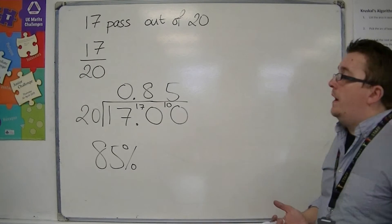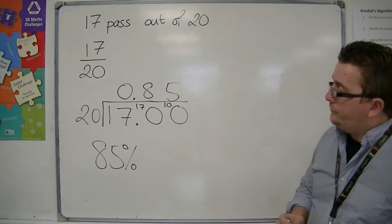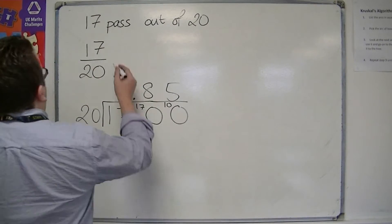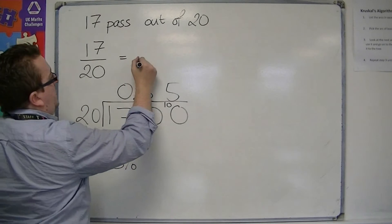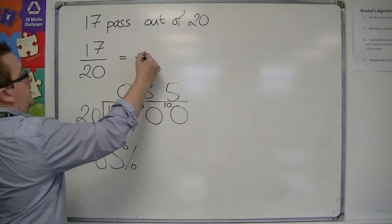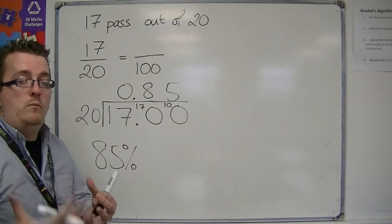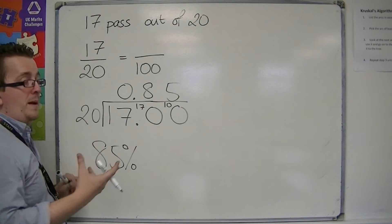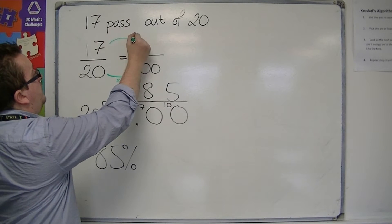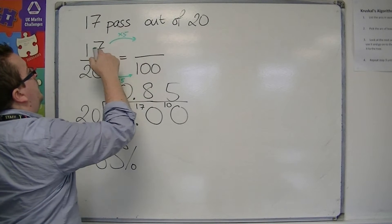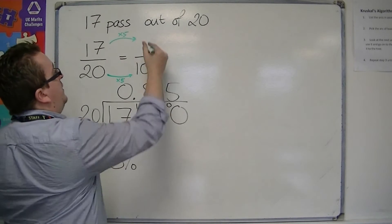So this is 0.85 which would be 85% multiplying by 100. So you could do it that way and that's a perfectly valid way of doing it by hand. If you wanted to do it another way you might spot that you could write this as something over 100 using our equivalent fractions. So if you want to remember how we did equivalent fractions then look back at the video for it. Timesing the bottom by 5 we could also times the top by 5 and 17 lots of 5 is 50 plus 35 which makes the 85.